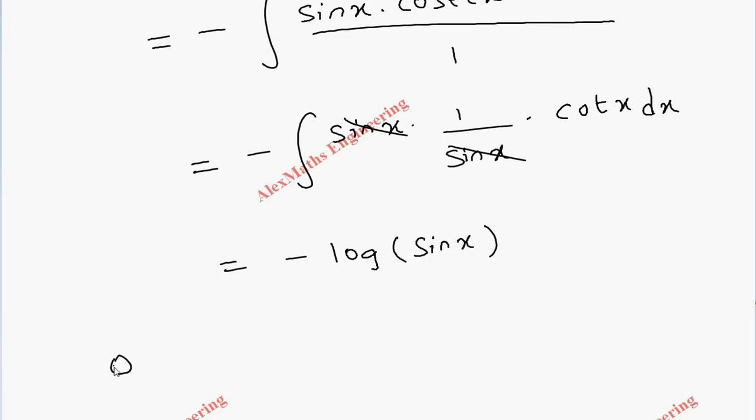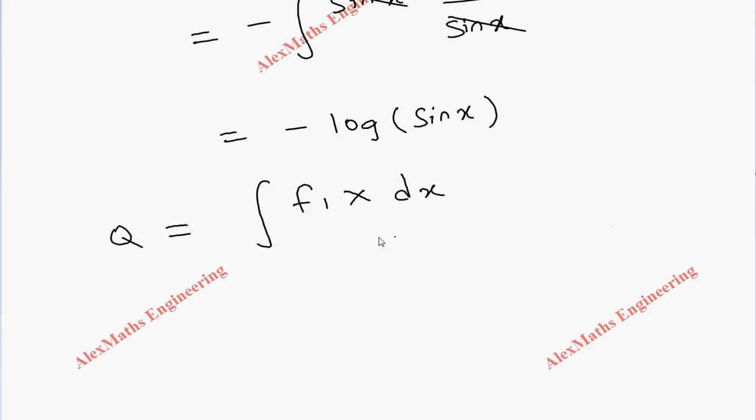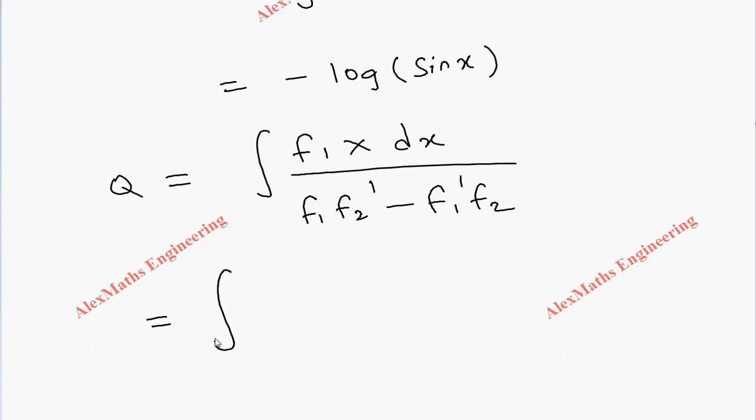Now coming to Q: Q = ∫(f₁X dx)/(f₁f₂' - f₁'f₂). So f₁ is cos x times X which is cosecant x · cot x, dx, divided by 1.